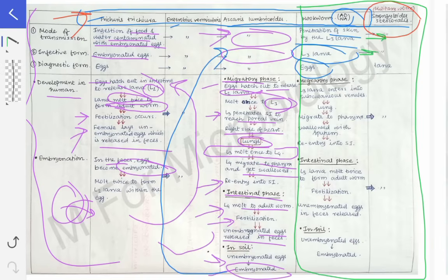In Strongyloides, the mode of transmission is also penetration of skin by the L3 larval stage, and the infective form is also L3. However, the diagnostic form in Strongyloides is larvae, not eggs. This is because Strongyloides is ovoviviparous — whenever it lays eggs, they immediately hatch out into larvae and do not remain viable outside. So we are not going to see eggs for diagnosis in Strongyloides; that's why the diagnostic form is larvae.